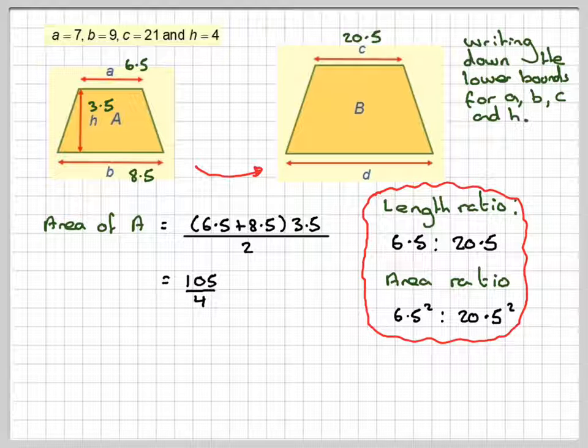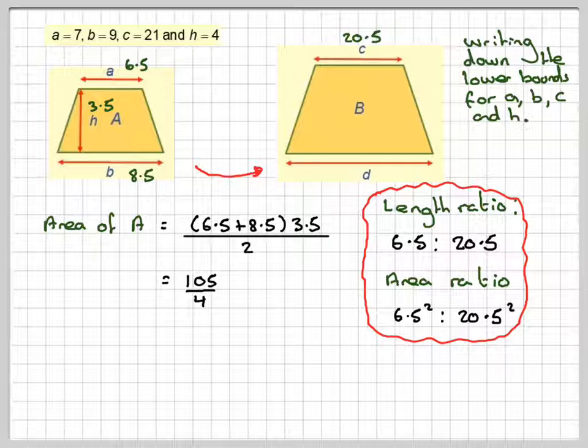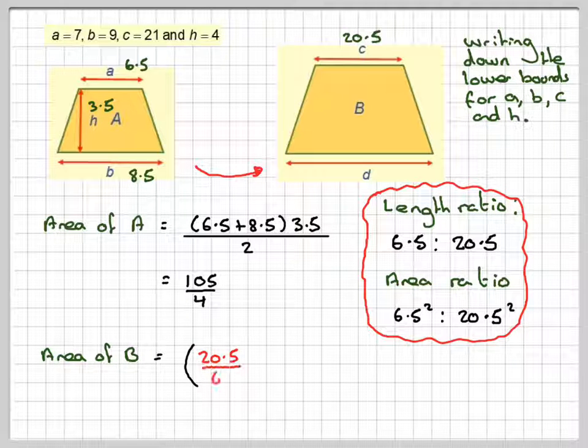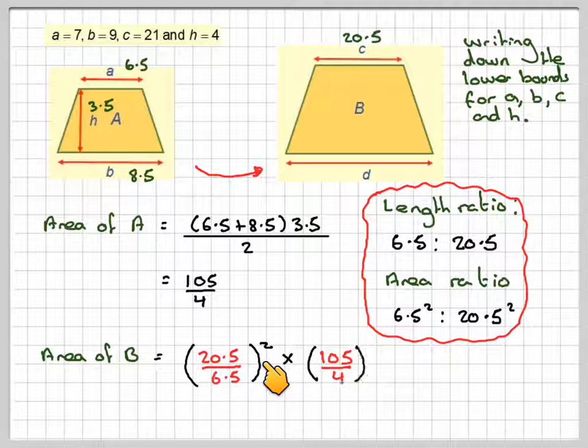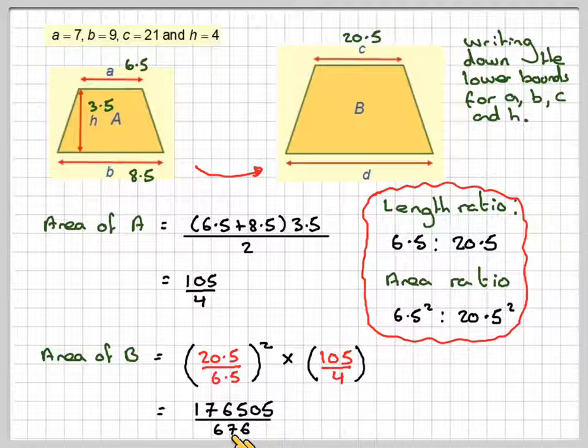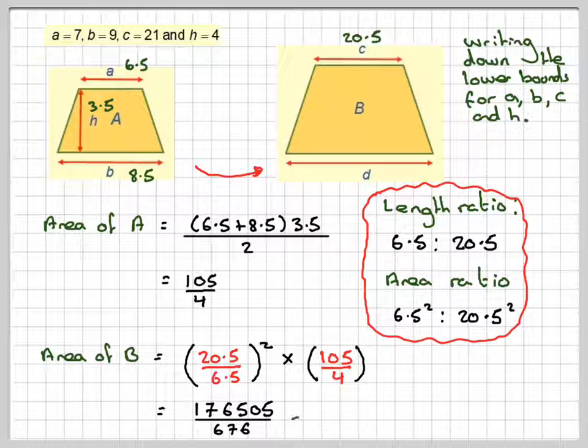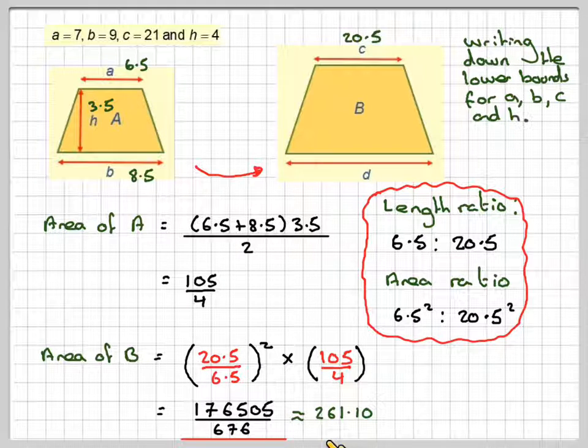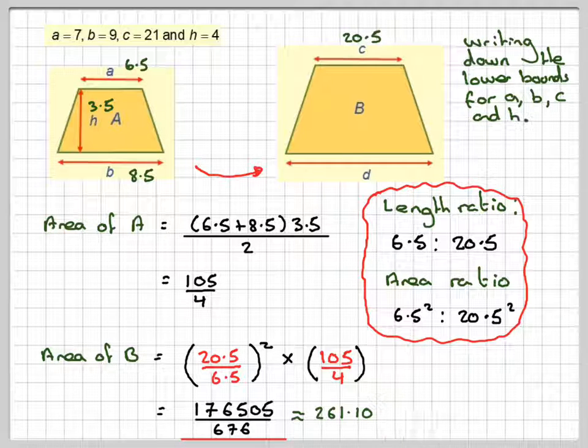We're going from the smaller to the larger, so the area of B will be 20.5 over 6.5 all squared times our area of A, which is 105 over 4, and that gives 176,505 over 676, which is approximately equal to 261.10.